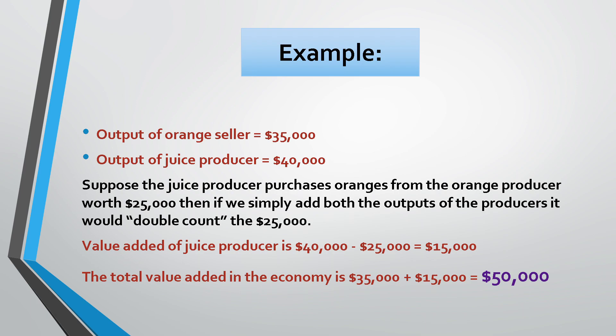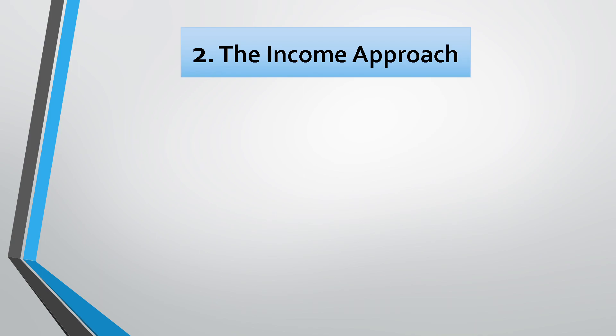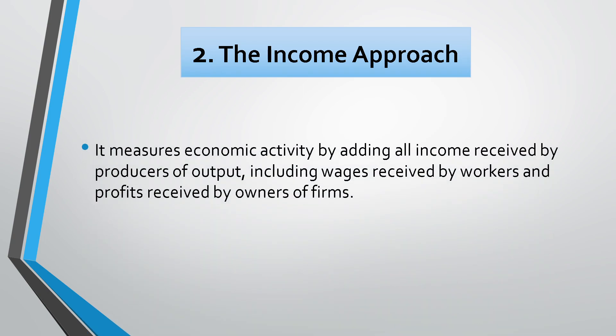Now the second is the income approach. The income approach measures economic activity by adding all income received by producers of output, including wages received by workers and profits received by owners of firms. According to this method, the net income payments received by all citizens of a country in a particular year are added up — that is, net incomes that accrue to all factors of production by way of net rents, net wages, net interest, and net profits — but incomes received in the form of transfer payments are not included.